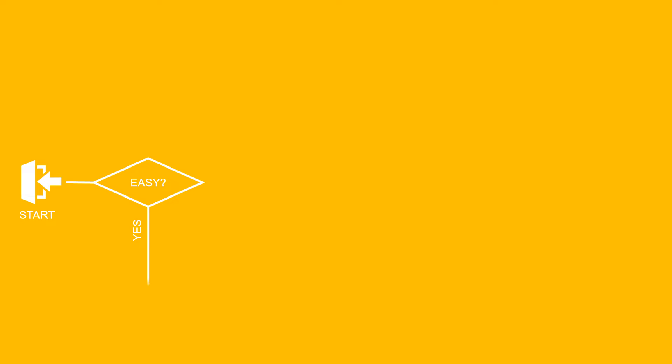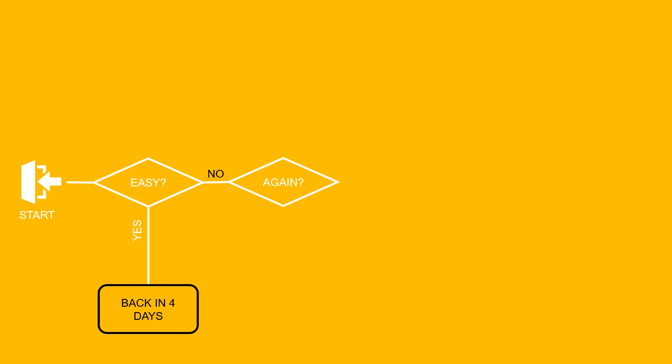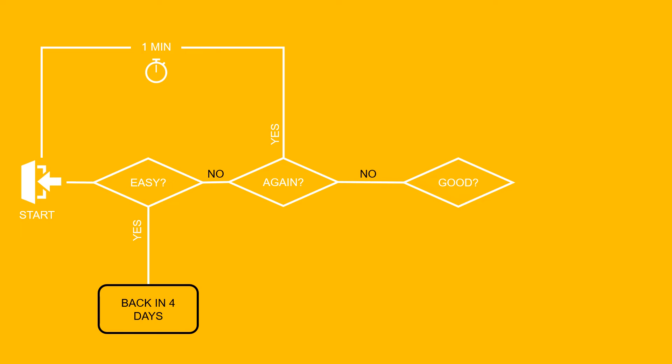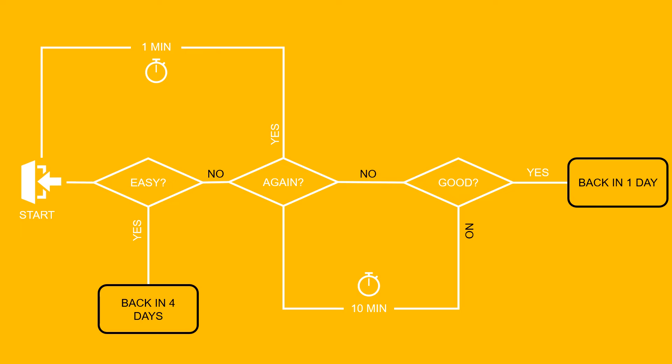Your self-assessment impacts how frequently the card will reappear. The objective is to remember all the vocabulary. Ask yourself: is it too easy? If yes, your daily session is finished and the card reappears in four days. If no, do you want to practice again? If yes, Anki shows it in one minute and continues until you get the right answer. If you got the right answer but don't consider it easy, your session continues and Anki shows it 10 minutes later. If you get it right a second time, you'll see it the next day; otherwise every 10 minutes until you get it right twice consecutively.